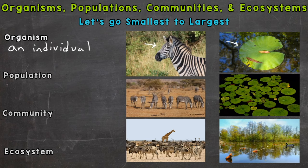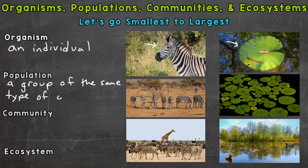After an individual organism, we move to population. A population is a group of the same type of organisms, so we are growing in size here. We started with the smallest — an individual organism — and now we're going to a group of the same type of organisms in a given area. For example, we have our population of zebras and our population of lily pads here. So same species of organism in the same area.